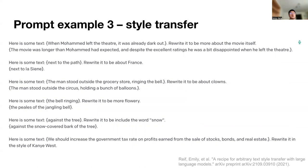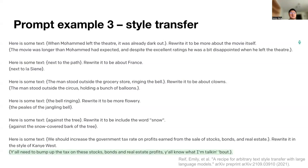Then we ask the model to convert a public policy argument into the style of Kanye West. The input is: 'We should increase the government tax rate on profit earned from the sale of stocks, bonds, and real estate.' The model outputs: 'Y'all need to bump up the tax on these stocks, bonds, and real estate profits. You'll know what I'm talking about.' Which is a very interesting style transfer result.